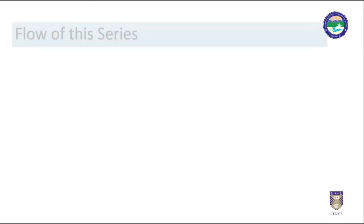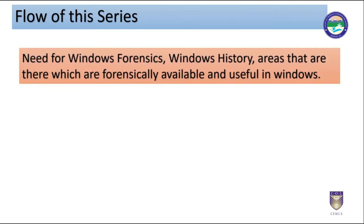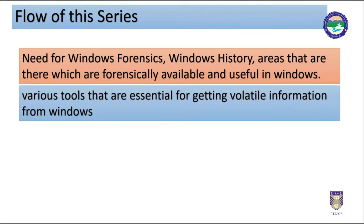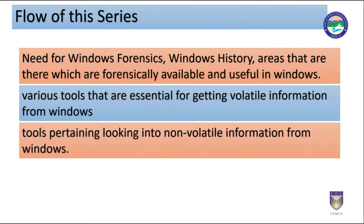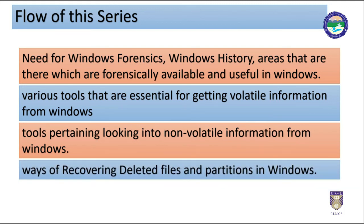Friends, in this video series, firstly in part 1, we will see the need for Windows forensics, Windows history, and the areas that are forensically available and useful in Windows. Then secondly in part 2, we will delve shortly into various tools that are essential for getting volatile information from Windows. Thirdly, in part 3, we will visit tools pertaining to non-volatile information from Windows. And lastly, in part 4, we will look into ways of recovering deleted files and partitions in Windows.